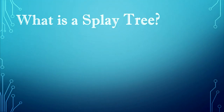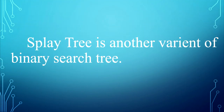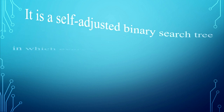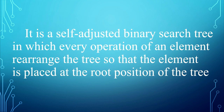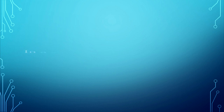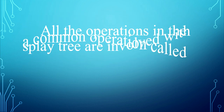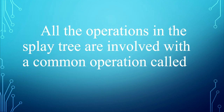What is a splay tree? A splay tree is another variant of a binary search tree. It is a self-adjusted binary search tree in which every operation on an element rearranges the tree so that the element is placed at the root position of the tree. In a splay tree, every operation is performed at the root of the tree. All the operations in a splay tree involve a common operation called splaying.